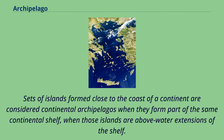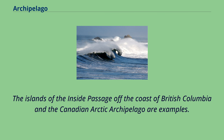Sets of islands formed close to the coast of a continent are considered continental archipelagos when they form part of the same continental shelf, when those islands are above-water extensions of the shelf. The islands of the Inside Passage off the coast of British Columbia and the Canadian Arctic Archipelago are examples.